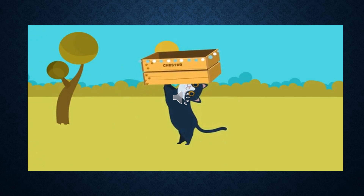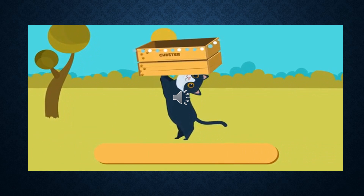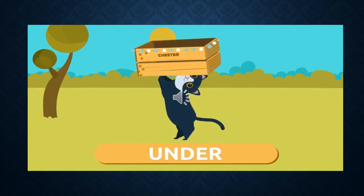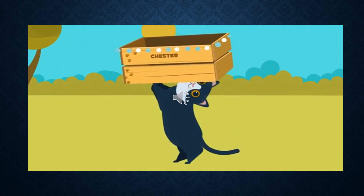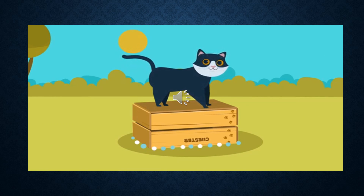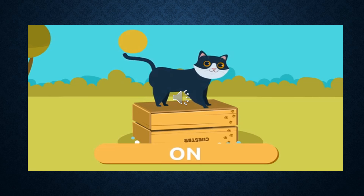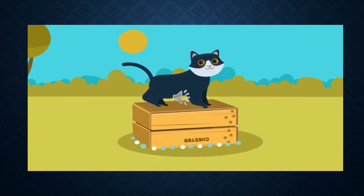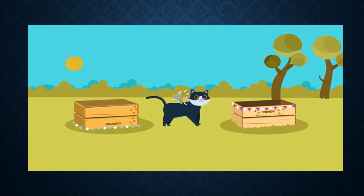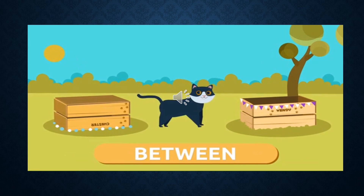Where is Chester now? Chester is under the box. He's under it. The cat is under the box. Where is Chester? Chester is on top of the box. He's on top of it. The cat is on top of the box. Where is Chester? Chester is between the boxes. He's between them. The cat is between the boxes.